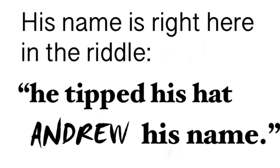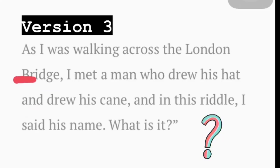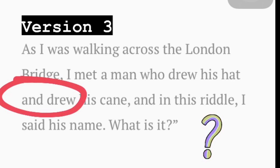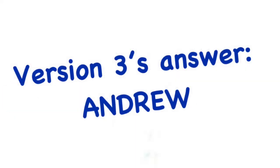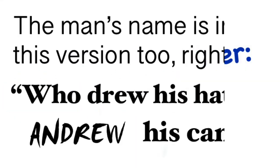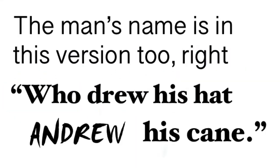The answer is hidden in the riddle itself. Versions one and two share the same key line, showing on the screen right now: 'he tipped his hat and drew his name' — that's why they have the same answer. The third version is a little bit trickier; however, the answer is still Andrew. You can see the line that says 'who drew his hat and drew his cane.'